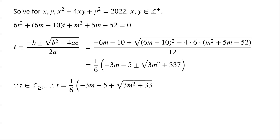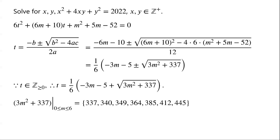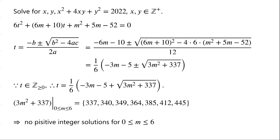As t is a non-negative integer, the negative root is discarded. So t equals (1/6) times (negative 3m minus 5 plus root of (3m squared plus 337)). We know that when m is between 0 and 6 inclusive, 3m squared plus 337 equals 337, 340, 349, 364, 385, 412, 445 respectively. As none of these is a perfect square, there are no positive integer solutions when m is between 0 and 6.